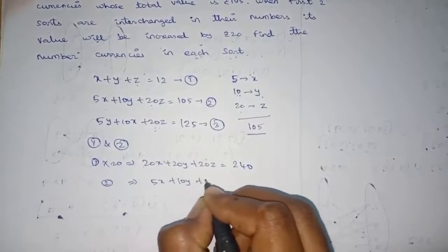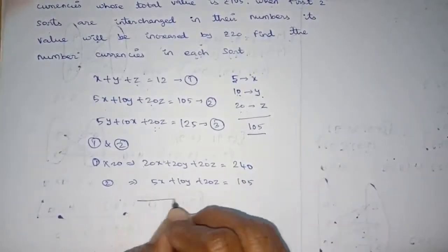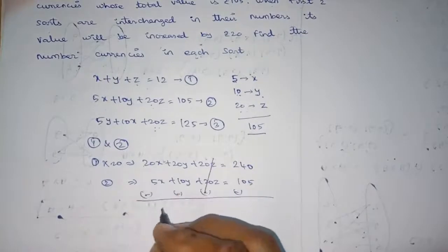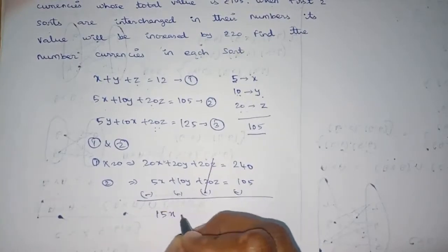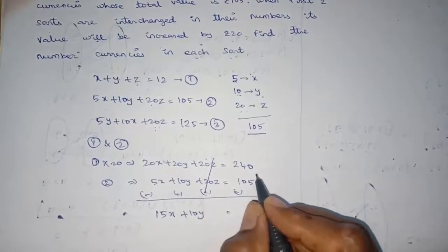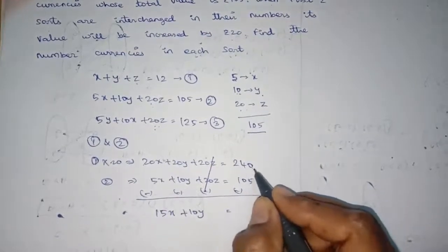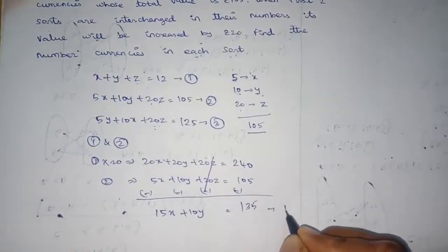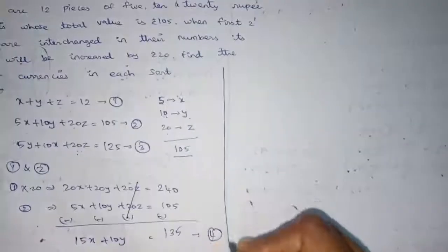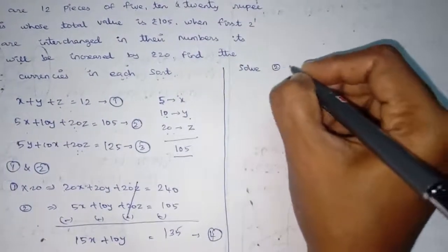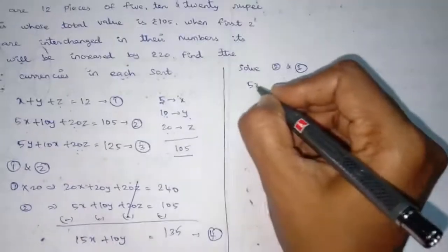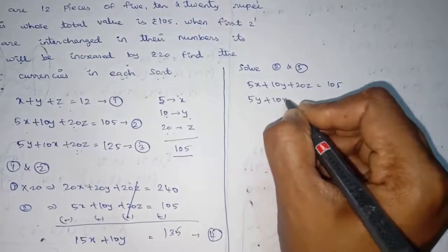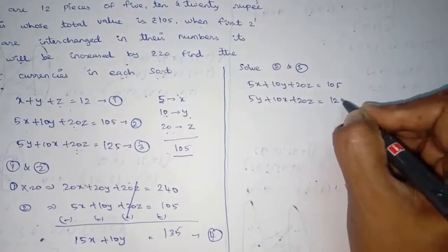Equation 2: 5X plus 10Y plus 20Z equals 105. We change the sign and cancel. Subtracting gives 15X plus 10Y equals 135. Next, solving equations 2 and 3: 10Y plus 20Z equals 105, and 5Y plus 10X plus 20Z equals 125. The 20Z terms cancel.